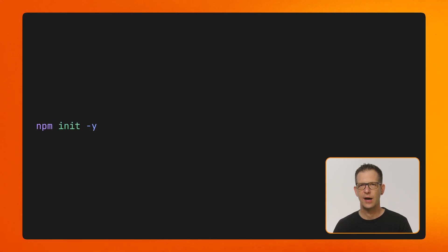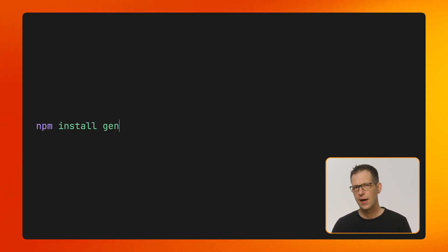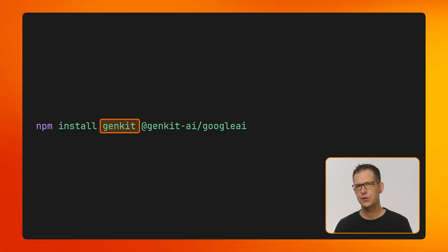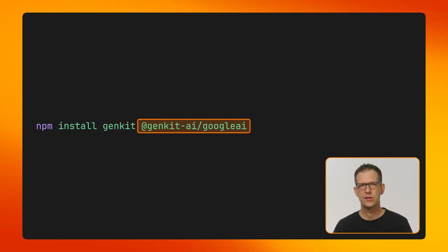You can use GENKIT in any environment that supports Node.js. To keep things simple for this introduction, I have created a new project using npm init. To add GENKIT to your app, install it using your favorite package manager. In addition to the core package, I recommend installing the Google AI package to get access to the Gemini family of models.